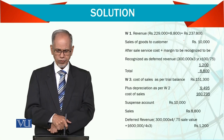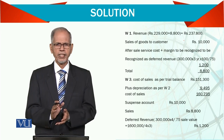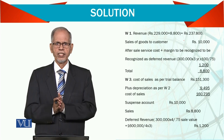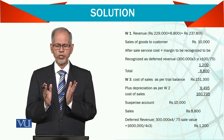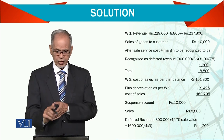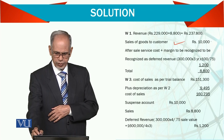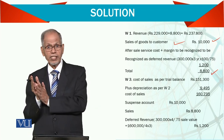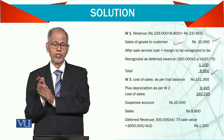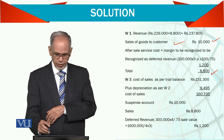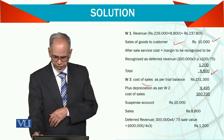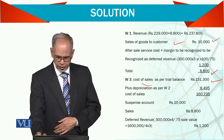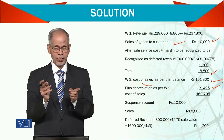Regarding working number one — revenue: we added 8,800 due to service charges asked for in the sale of goods to the customer of 10 million. That is the adjustment, and that is how the 8,800 was worked out. Similarly, the third working is cost of sales. The balance sheet has been prepared, all assets have been done, and the total depreciation has been added.